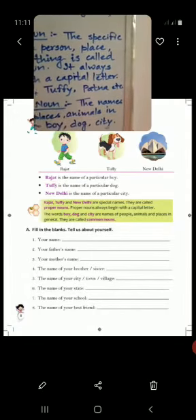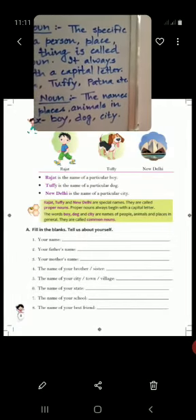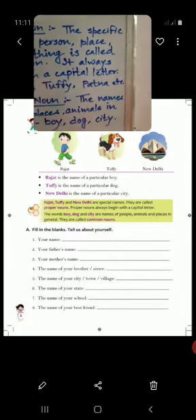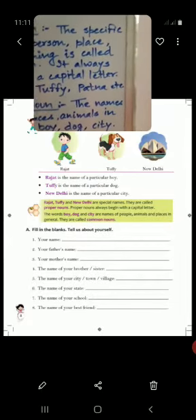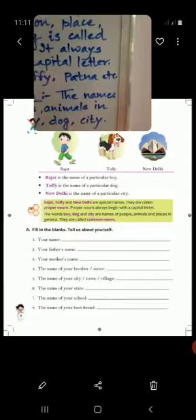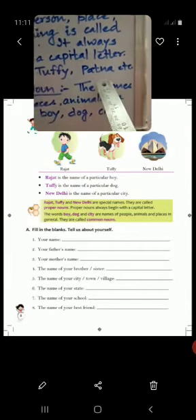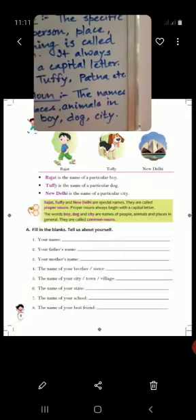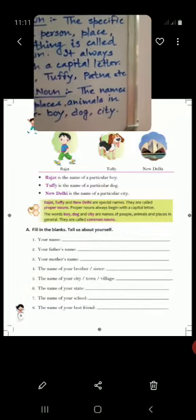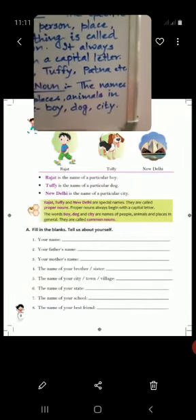Similarly, there are lots of cities in the world, even countries. But when we are talking about a particular city or country, we call its name. For example, Patna, Delhi, Mumbai, India, America, etc.